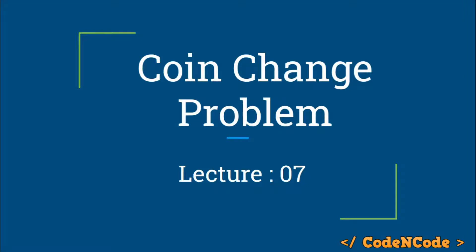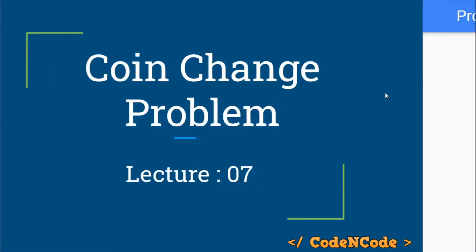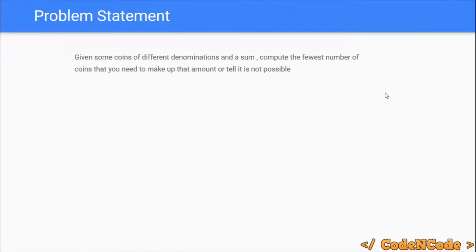Hello guys, this is CodeEncode and this is the 7th lecture of the dynamic programming series part 1. In this lecture we are going to take a look at the problem coin change. The problem is: you are given coins of different denominations and a sum value. You have to compute the minimum number of coins that you need to make up the total sum, or tell that it is not possible.